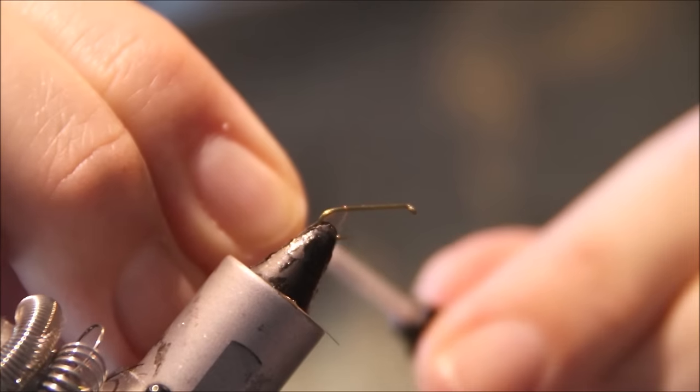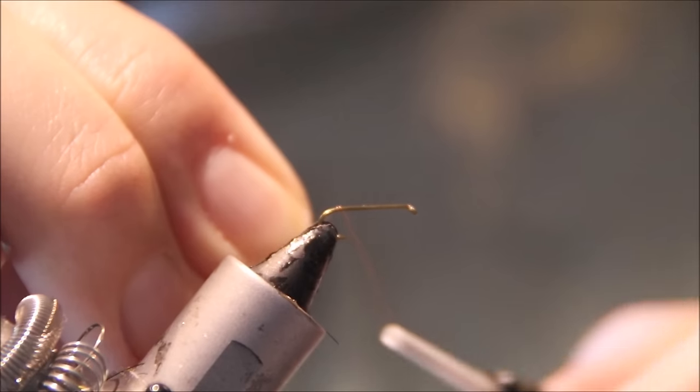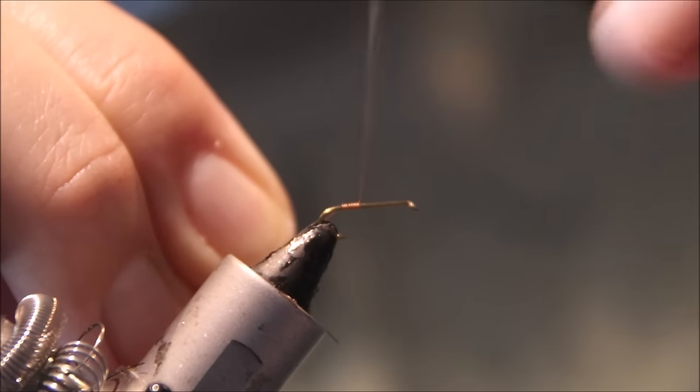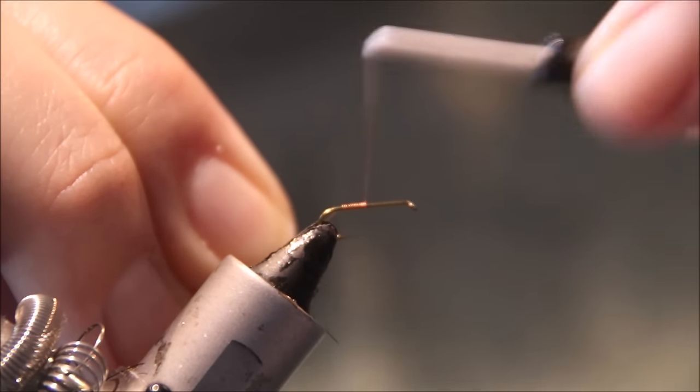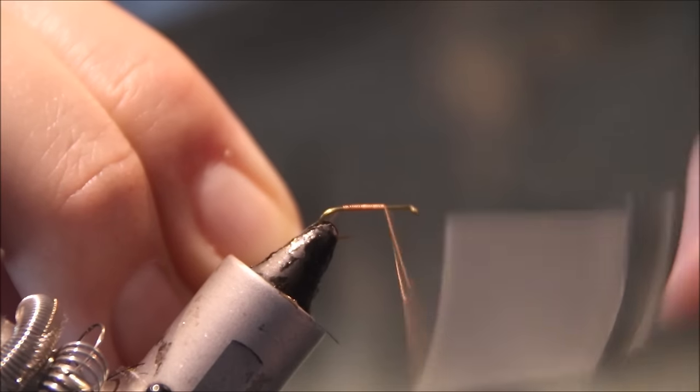We attach the wire in line with where the barb would have been. Just hold your tag end and then run forward towards the eye in even turns.